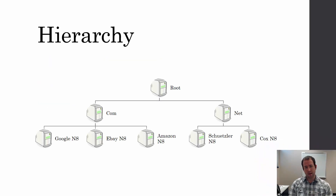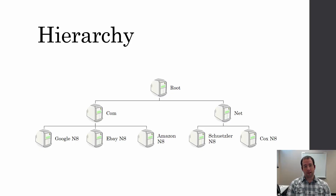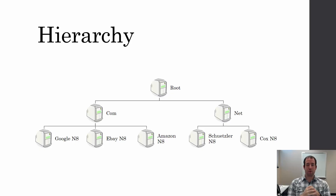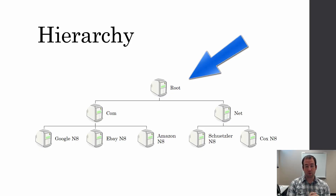The way DNS is organized is a hierarchy, and it starts at the end of the domain name. What you may not know is that at the end of the domain name there's an implicit dot — it's invisible, you don't have to type it most of the time, but it's there.